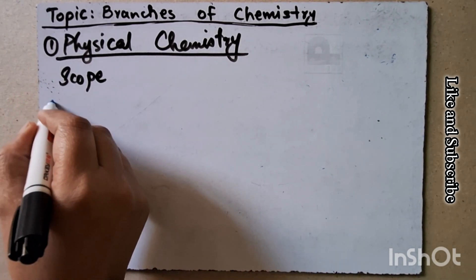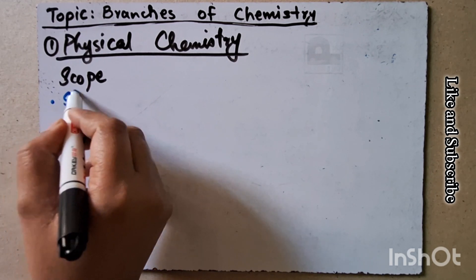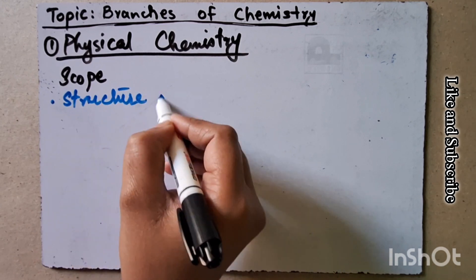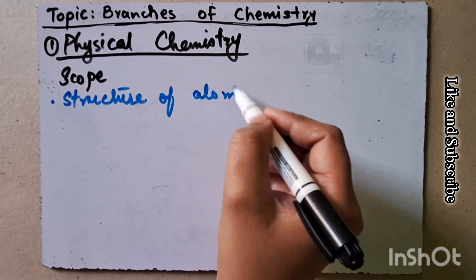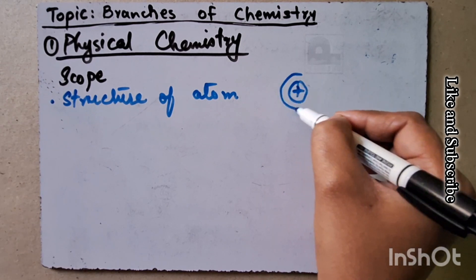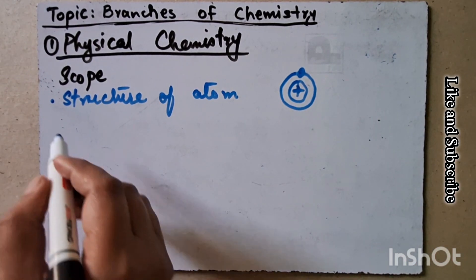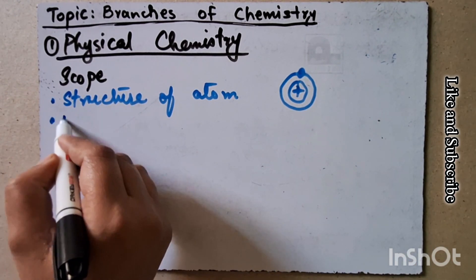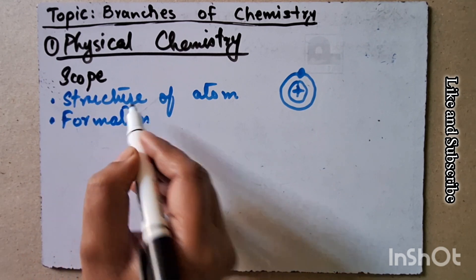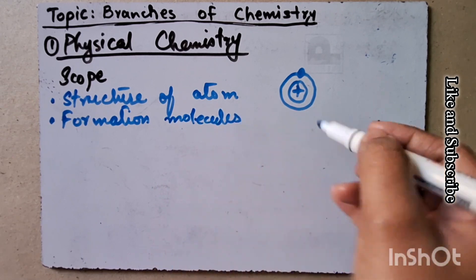What is the scope of physical chemistry? Structure of atoms, for example hydrogen. Formation of molecules.